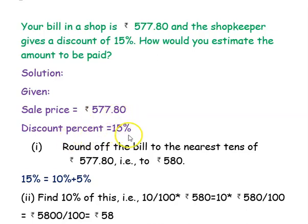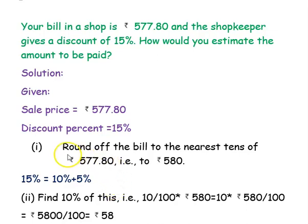You want to estimate the approximate amount to be paid. For that, the first step is to round off the bill — that is, we are going to round off the sale price to the nearest tens.